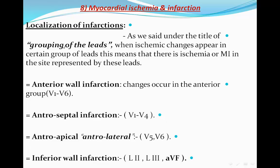Localization of infarction: ischemic changes appearing in a certain group of leads indicate ischemia or infarction in the site represented by those leads. Anterior wall infarction produces changes in the anterior group V1 to V6; septal infarction in V1 to V4; apical or anterolateral infarction in V5 and V6.